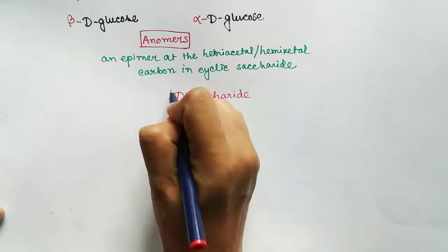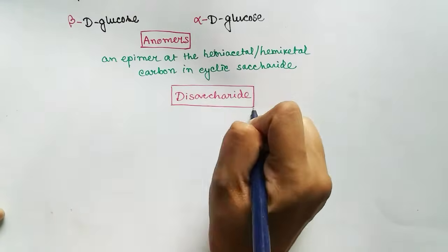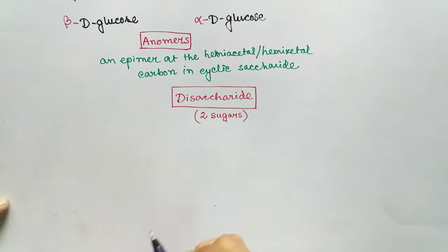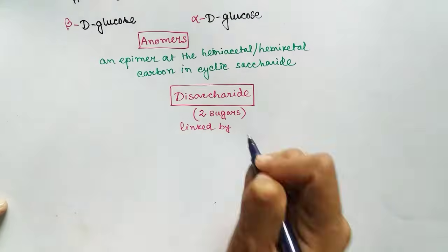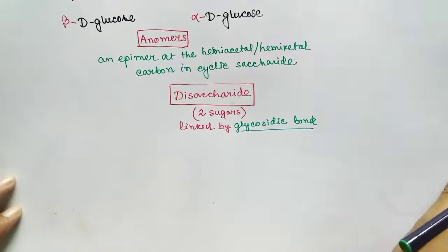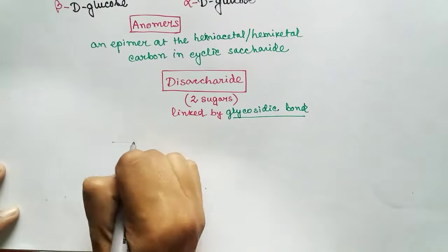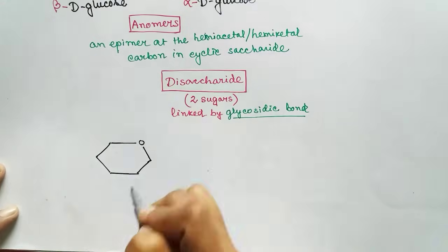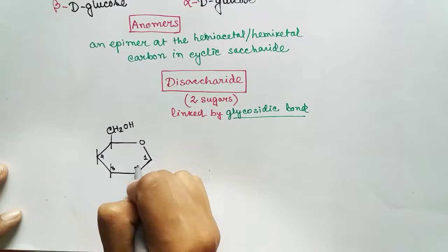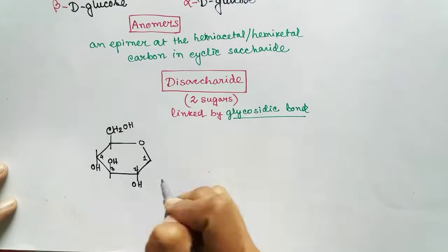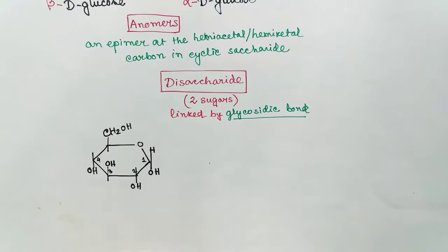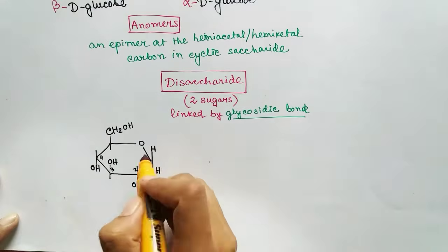In the previous video we talked about the alpha and beta variants of monosaccharides. In this video we will talk about how the alpha and beta carbohydrate monosaccharides contribute in the formation of disaccharides and polysaccharides. Disaccharides are formed by linking two monosaccharides by a glycosidic bond — so what is a glycosidic bond?